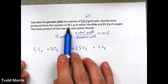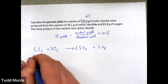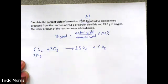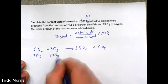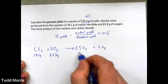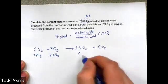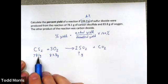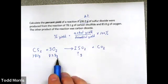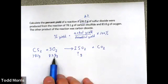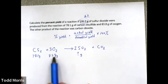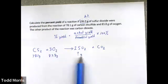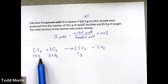From the problem, we reacted 78.1 grams of CS2 with 83.8 grams of O2, and we need to find the theoretical yield of SO2. When you're given the amounts of both reactants, this is likely a limiting reactant problem, meaning one reactant will run out first, stopping the reaction. The amount of the limiting reactant controls how much product is actually produced.